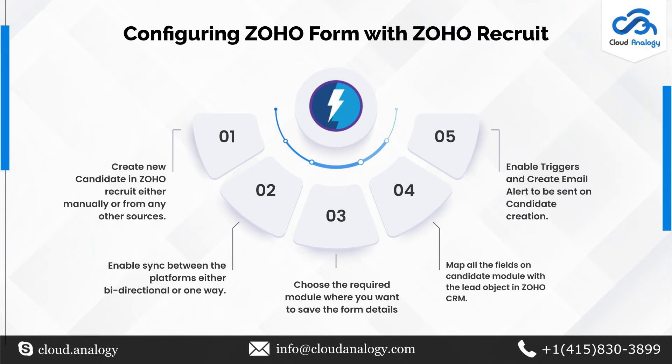Lastly, we need to enable the triggers and create some automation for sending email alerts as per the client's requirements. We can easily send an email alert to the candidate upon creating a new lead. Let me now show you a demo of the project to help you understand how a candidate is created and how the candidate is converted into a lead in Zoho CRM.